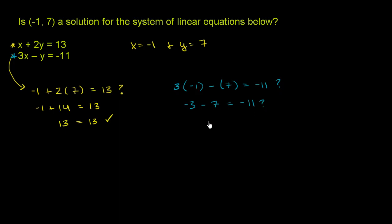Negative 3 minus 7, that's negative 10. So we get negative 10 equaling negative 11. No, negative 10 does not equal negative 11. So x equaling negative 1 and y equaling 7 does not satisfy the second equation. So it does not sit on its graph.